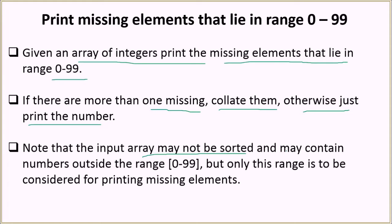This array may also contain numbers which are outside the range of 0 to 99. It might have an element say 150 or 200, but we need to ignore that number and only consider the range 0 to 99.